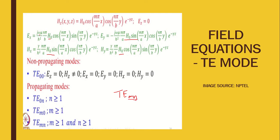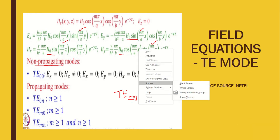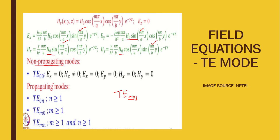To study the non-propagating modes of TE, substitute M=0, N=0. EX becomes 0 due to sin 0, EY becomes 0 due to sin 0, HX becomes 0, and HY also becomes 0. So all transverse field components vanish to zero and this falls under non-propagating modes. For propagating modes, substituting M=0 and N=1 shows that not all field components vanish — some components are present. For any value of M and N greater than or equal to 1, the field components are present and these are propagating modes.